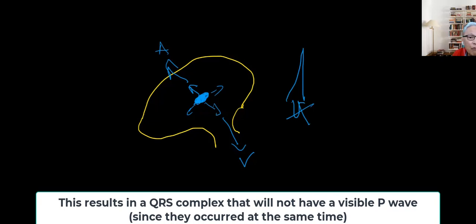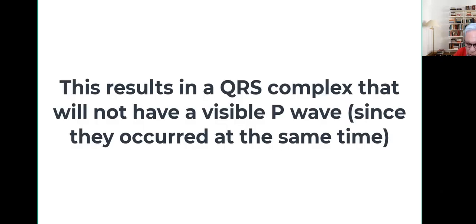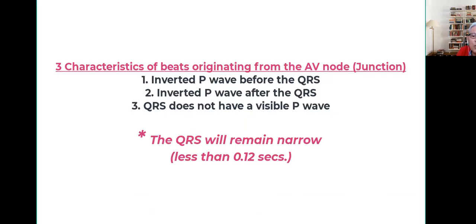This is weak. And therefore, what's going to happen is you're going to have a QRS without an identifiable P wave before and after it. Those are the characteristics of beats that are coming from the AV node.